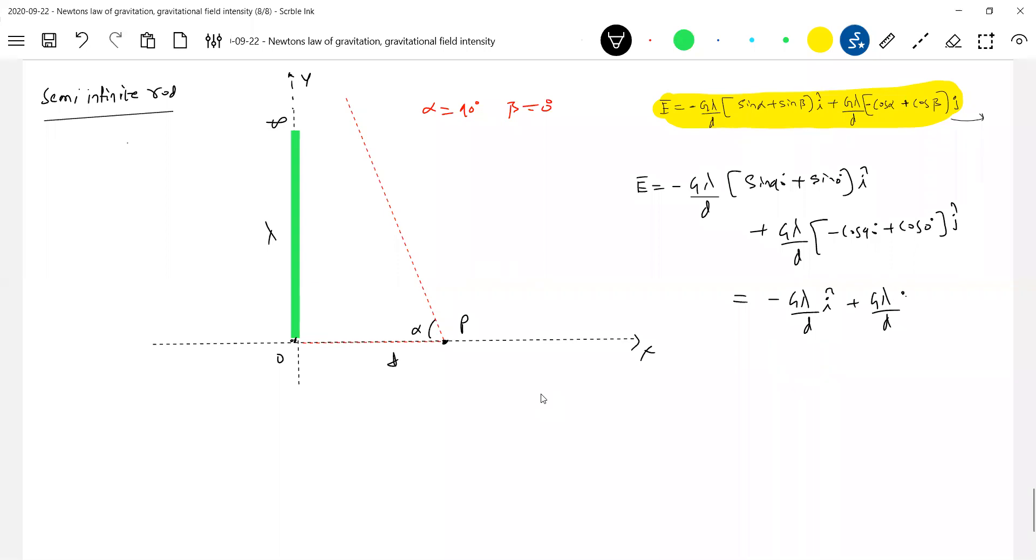...plus g lambda d j cap. Very important - there are two components, one i component, other j component, and their magnitudes are equal. Rather than remembering like this, I'll go for a better way.